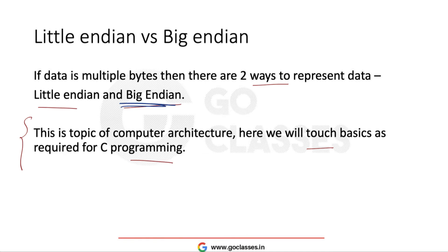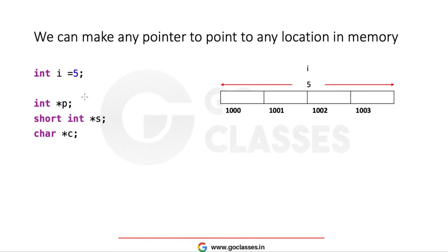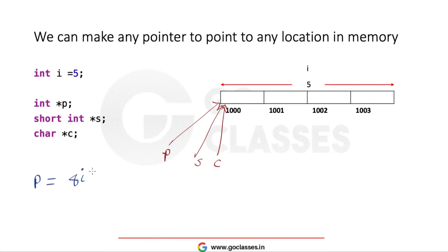Now let's see how 5 is stored and how we can make any pointer point to any memory location. Suppose 5 is stored at address 1000. In little-endian it is stored in reverse, in big-endian as the same binary pattern. I can make three pointers — an int pointer p, a short pointer s, and a char pointer c — all point to the same location. For p it is just address of i; for s and c I typecast the address of i accordingly.